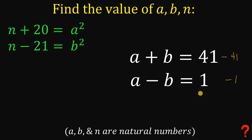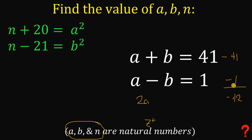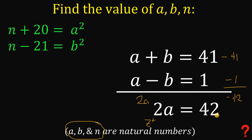You might ask: why not use negative 41 and negative 1? If we added those two equations, the left side would give 2a equal to negative 42, meaning a would be negative — which is not allowed since a, b, and n must be natural numbers or positive integers. So negative factors don't work. Sticking with 41 and 1, we add the two equations to eliminate b, giving us 2a equals 42.